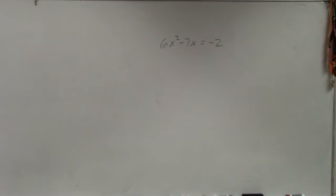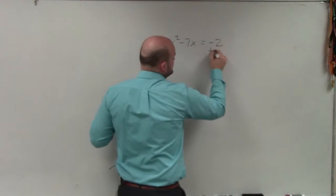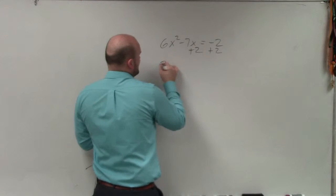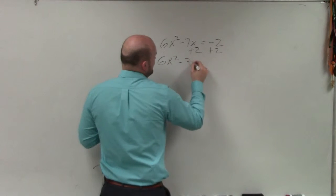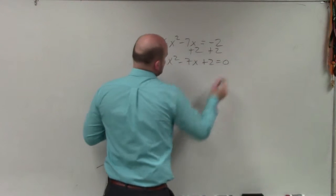So if you have a problem like this, the first important thing that we need to do is set it equal to 0. So I need to get the 2 on the same side. So I have 6x squared minus 7x plus 2 equals 0.